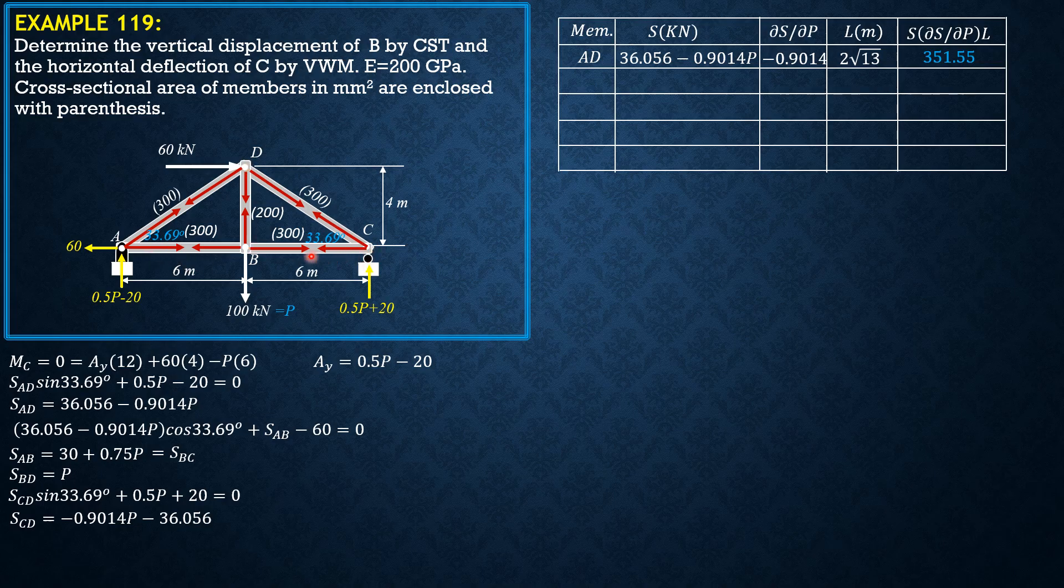So there is color coding because AD, CD, AB, BC have the same area of 300 mm squared. Only BD has an area of 200. Next member is AB which is 30 plus 0.75P, so the partial derivative with respect to P is 0.75 and the length is 6. So the product with P equals 100 is 472.5. Next is BC which is equal to AB, so we copy everything: 30 plus 0.75P, 0.75, 6, and 472.5.